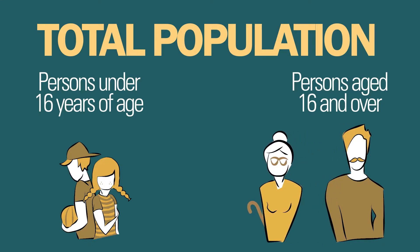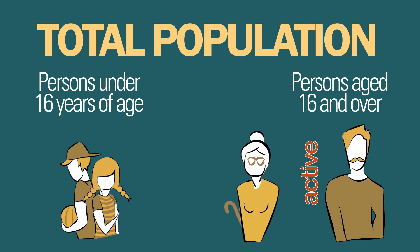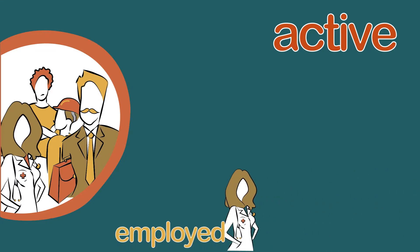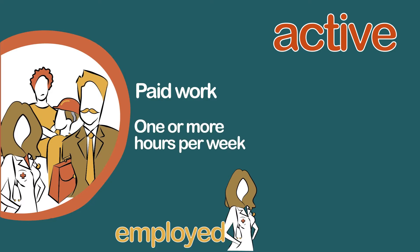Then we divide this group into the economically active and inactive populations. The economically active population includes two large groups. Employed persons are those persons with employment or some sort of job. It is enough to work one hour a week to be considered employed.